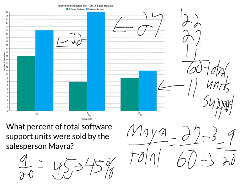On the GED test, if they were simply asking what's 9 divided by 20 it would be easy. But what they do is cloak the question in a picture, which adds a degree of complication. If we are faithful to evaluating the information given and reading closely to recognize 'software support units,' we can interpret the data, set up our percent, divide it out, and be successful in getting the correct answer.